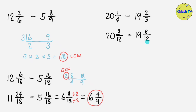Subtract the fractions first by subtracting the numerators. 3 minus 8 cannot be done because 8 is greater than 3. The fraction of the minuend is less than the fraction of the subtrahend, so we need to regroup. The fraction will borrow from the whole number 20. This time, let's do the step-by-step process in regrouping.